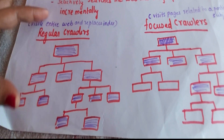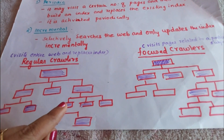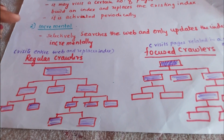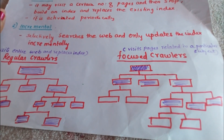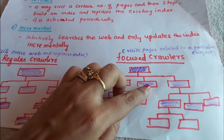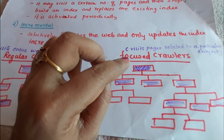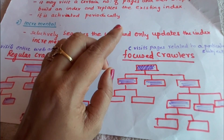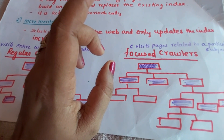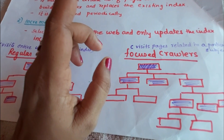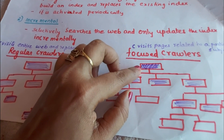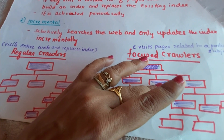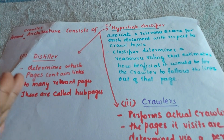In the regular crawler, the shaded portion shows all visited pages — it visits the entire web and replaces the index. In the focused crawler, you can see the shaded portion is not everywhere; it visits only pages related to a particular subject or topic of interest. A focused crawler determines pages that are not relevant, and their links should not be followed — the entire set of possible pages underneath them are pruned and not visited. This provides better scalability as the web grows.